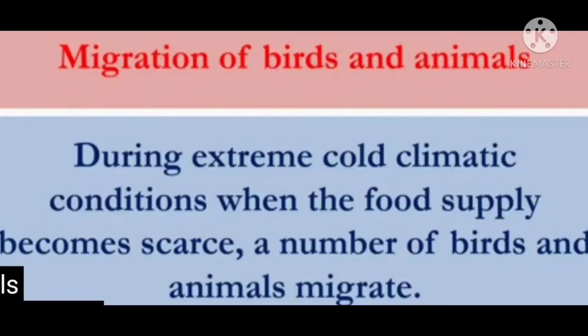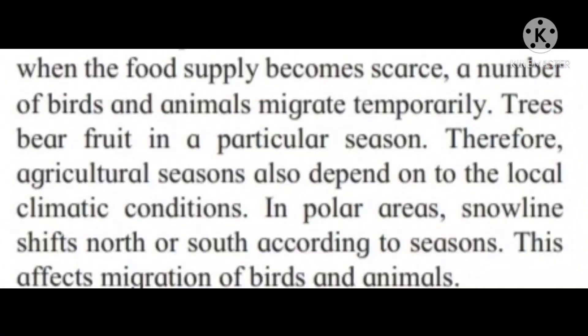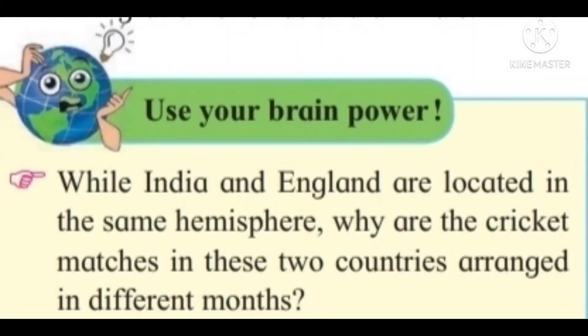Our adaptation to climatic conditions is possible only up to a certain limit. During extreme cold climate when food supply becomes scarce, a number of birds and animals migrate temporarily. Trees bear fruits in a particular season; therefore, agricultural seasons also depend on local climatic conditions. In polar areas, the snow line shifts north or south according to seasons, affecting migration of birds and animals.